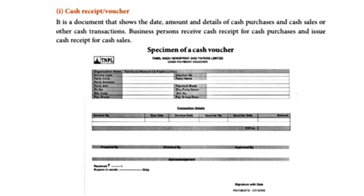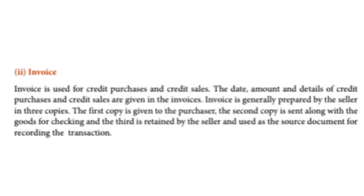Specimen of a cash receipt — for example, New Print and Papers, Cash Payment Voucher. This is the voucher. This is just a glance. For example, the voucher contains: invoice type, party code, party address, party site, all details, voucher number, and party name. These are the transaction details.